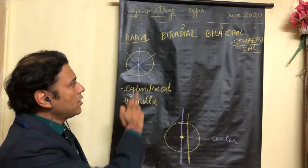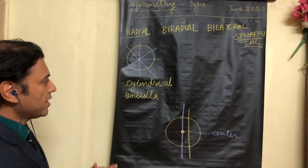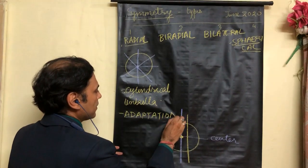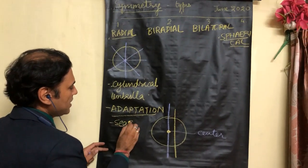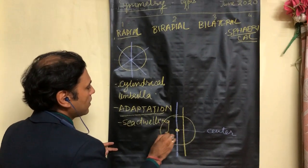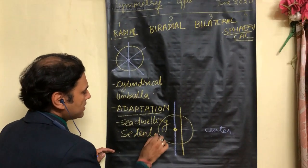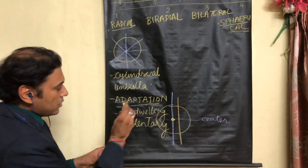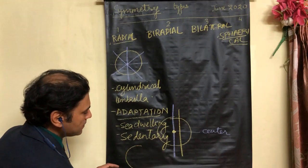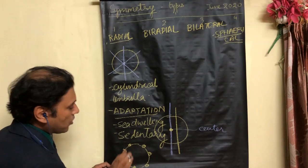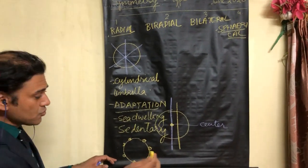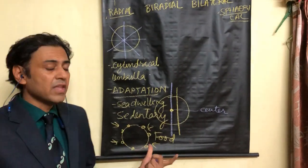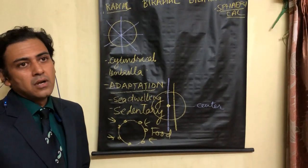Radial symmetry is an adaptation. It is mainly found in sea-dwelling organisms and organisms that are sedentary or attached — they do not move much. This type of symmetry has sensory organs distributed in all directions of the body, so they can collect food from all directions and also sense danger from all directions.